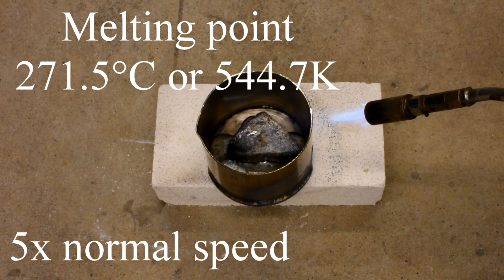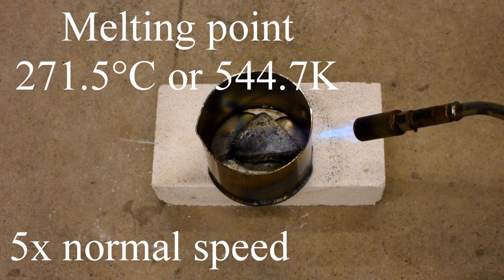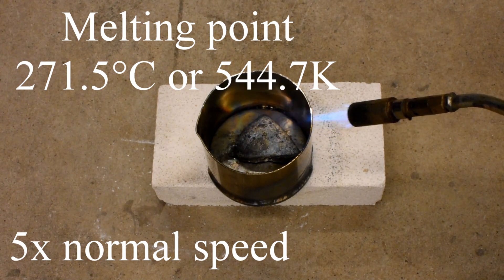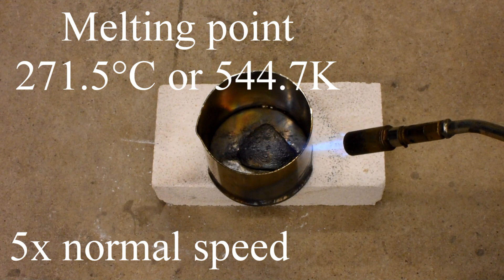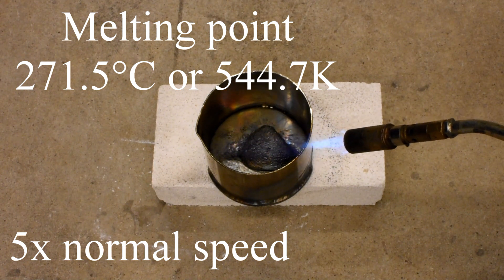Bismuth has a relatively low melting point of 271.5 degrees Celsius, so bismuth is easily melted using a blowtorch as shown here.